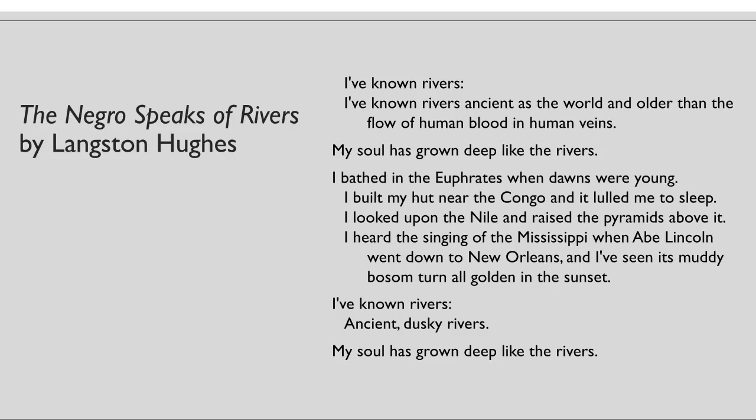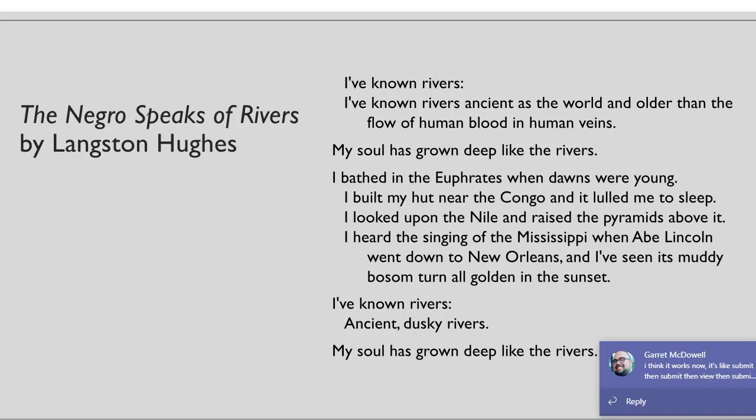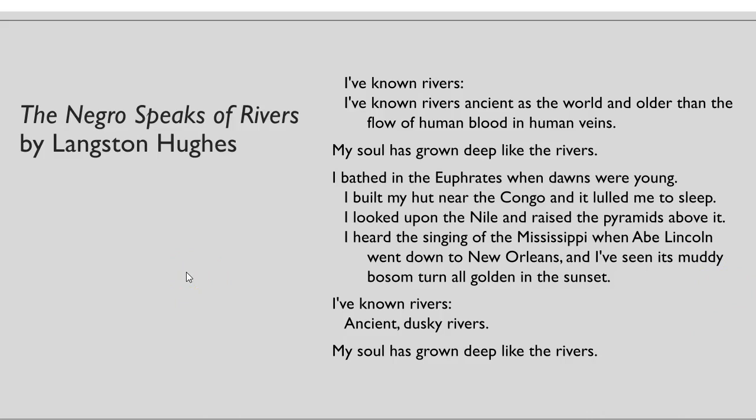Step one is read the title. The title is 'The Negro Speaks of Rivers' by Langston Hughes. Already from the title, I know that race is going to be involved — he says specifically 'The Negro Speaks of Rivers,' so he's already signaled that this is about race. Let me go ahead and read this poem out loud: 'I've known rivers. I've known rivers ancient as the world and older than the flow of human blood in human veins. My soul has grown deep like the rivers. I bathed in the Euphrates when dawns were young. I built my hut near the Congo and it lulled me to sleep. I looked upon the Nile and raised the pyramids above it. I heard the singing of the Mississippi when Abe Lincoln went down to New Orleans, and I've seen its muddy bosom turn all golden in the sunset. I've known rivers. Ancient, dusky rivers. My soul has grown deep like the rivers.'